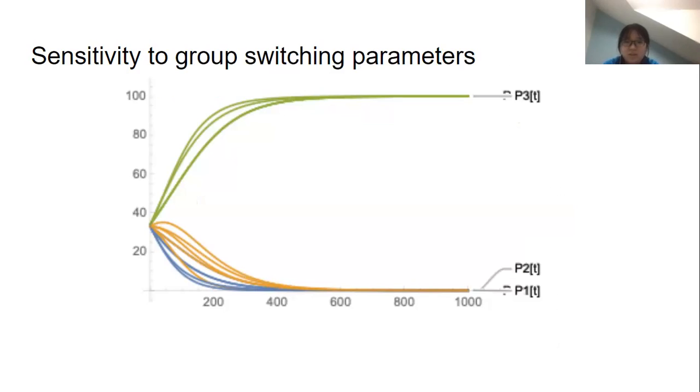The third graph is about the sensitivity to group switching parameters. We change the value of c in a range from zero to 0.002 and obtain this graph. We can see that our model is relatively stable against small fluctuations with initial parameters, so our model is quite stable with both the initial population and the parameters for our censorship models.